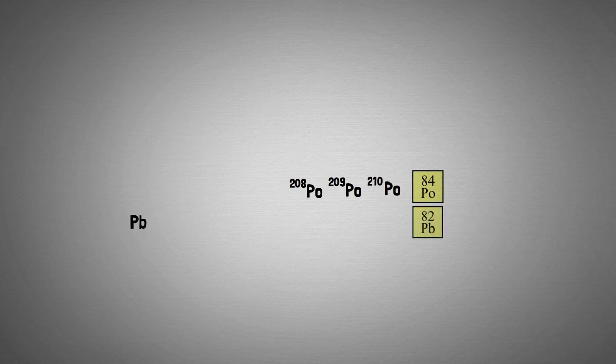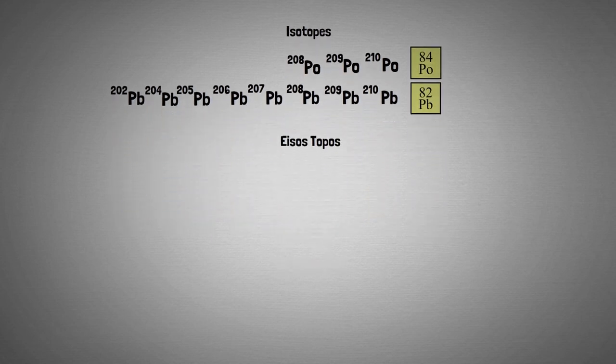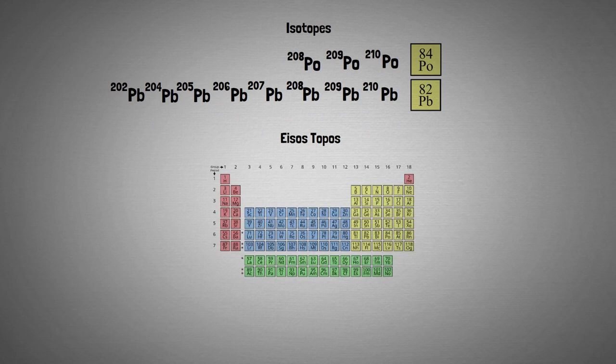Soddy had discovered that there were versions of our usual elements that were chemically the same, but radioactively quite different, and he called them isotopes, from the Greek isostopos, meaning in the same place. In this case, the same place on the periodic table.